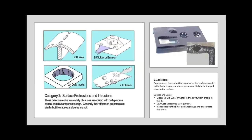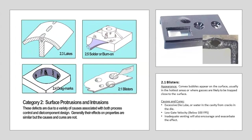The defect found in this powder-coated zinc die casting was clearly a blister. Upon sectioning the casting, it was confirmed that the blister was due to trapped air or gas within the zinc substrate of the casting. The cause of the porosity was also related to a combination of low gate velocity and venting.